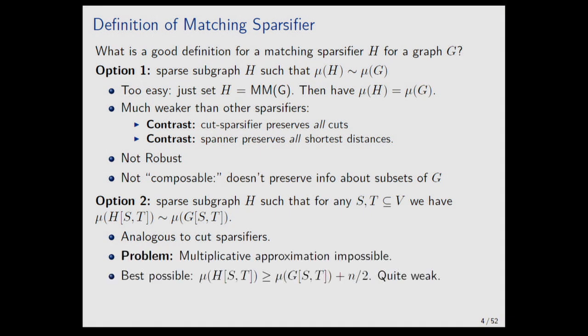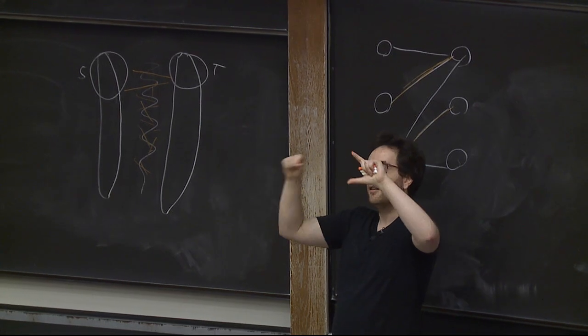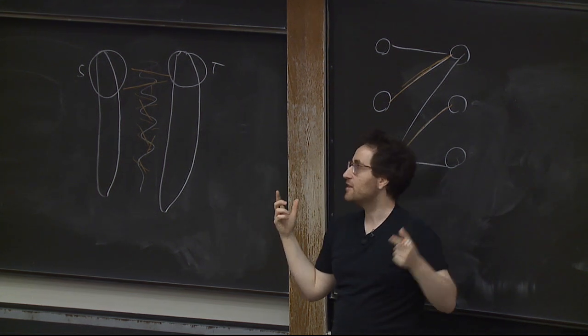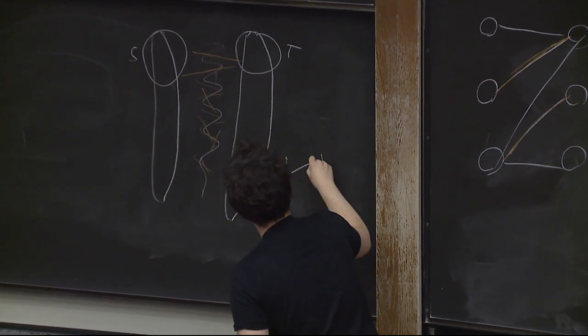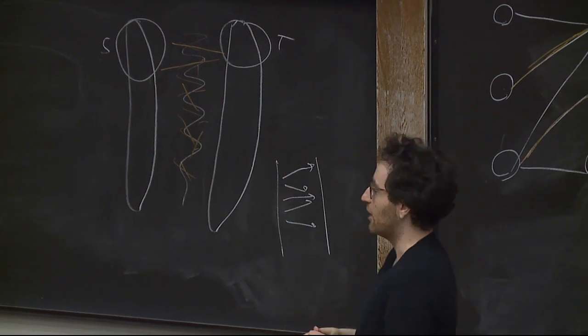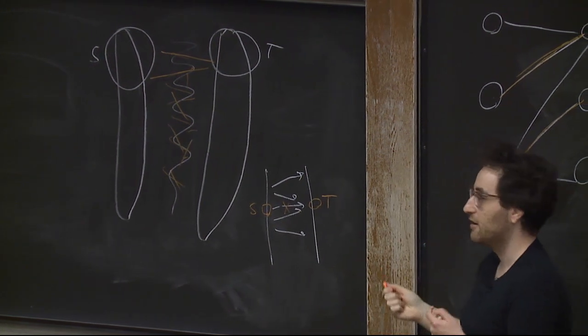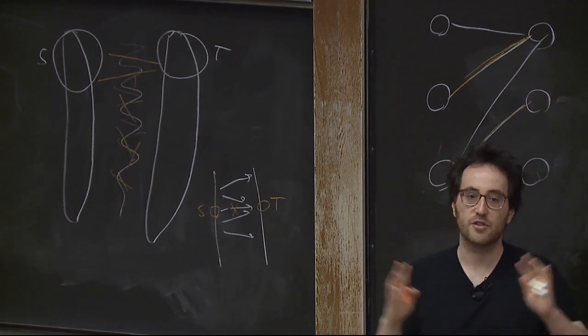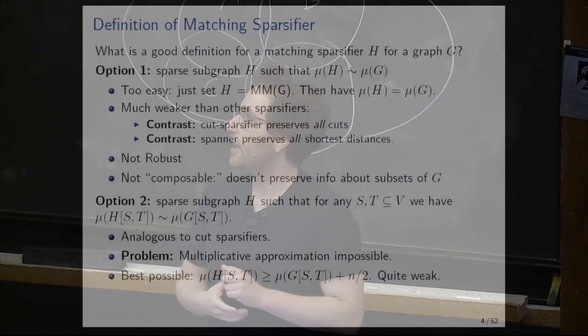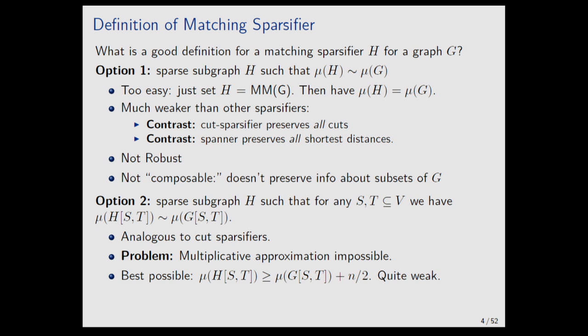But this is just not possible. If you want a multiplicative approximation, it's completely impossible. Even if you just want to differentiate zero from one — a subgraph such that for any S and T that have an edge in the original graph, your subgraph also has an edge — that's impossible. You would need to keep every single edge, because if there's some edge you don't keep, then setting S and T to be its endpoints gives matching one in G and zero in H. You can get an additive approximation, but it's really big — basically half the vertices — so it gives no useful information about small sets.